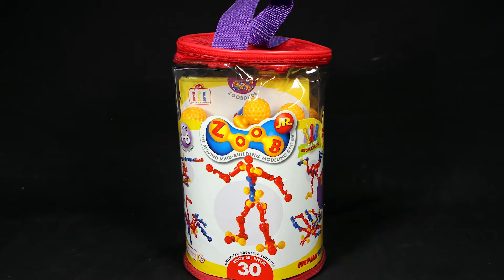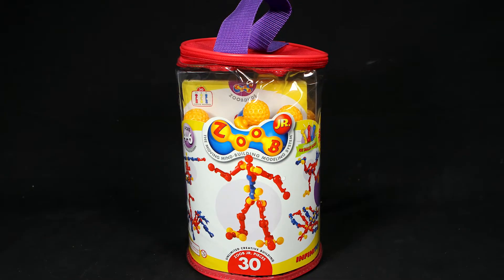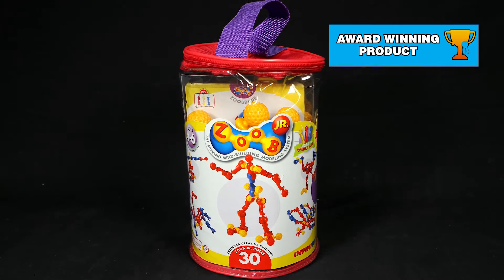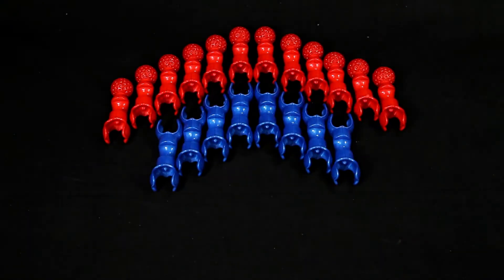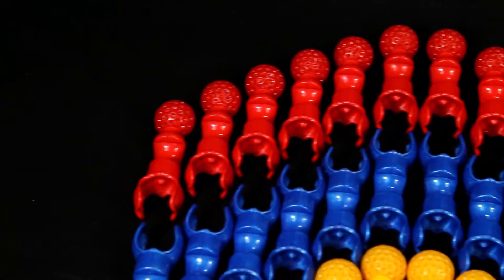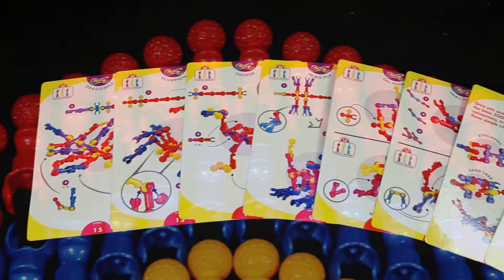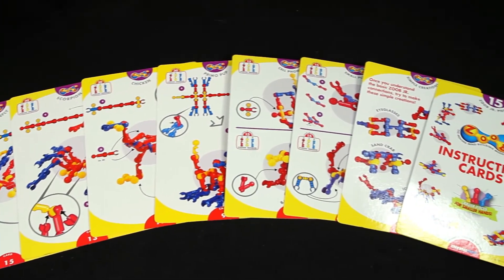The great big set of ZOOB pieces perfect for preschools and playrooms is waiting with the ZOOB Junior 30-piece set. Designed for younger children, it includes 30 unique ZOOB Junior pieces and sturdy instruction cards for a total of 20 creations.